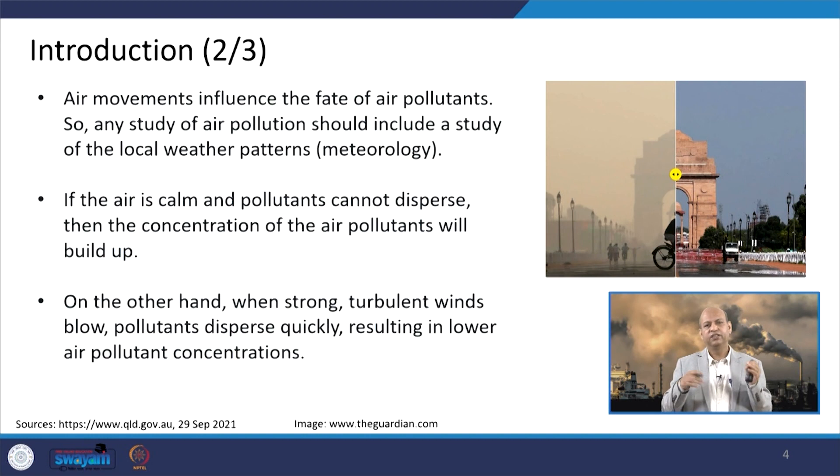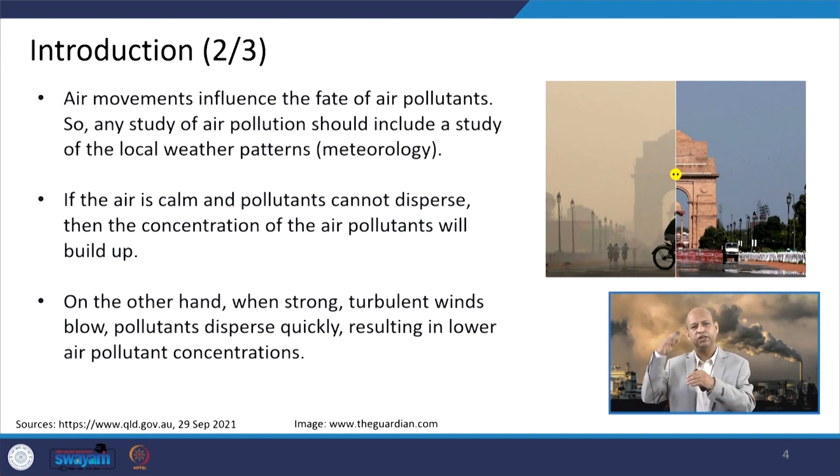If turbulence is very high, then maybe near the source the concentration may be high because of that very high turbulence. But if wind is blowing very rapidly, it can transport pollutants to longer distances in the downwind direction, and it can result in lower concentration of air pollutants because the dilution happens quickly in the atmosphere.